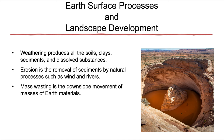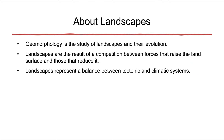Weathering produces all the soils, clays, sediment, and dissolved substances that we observe on the earth's surface. Erosion is the removal of sediment by natural processes such as wind and rivers. Mass wasting is the downslope movement of masses of earth material — it implies a large amount of material moving quickly. When we discuss landscapes, we're really discussing geomorphology: the study of landscapes and their evolution, how they form and change over time.